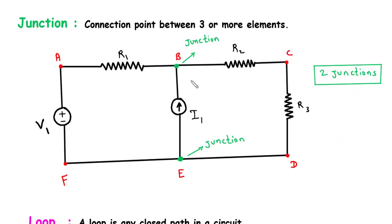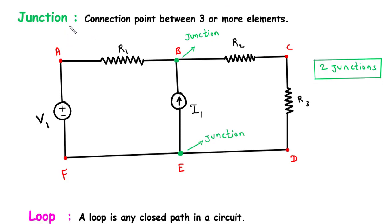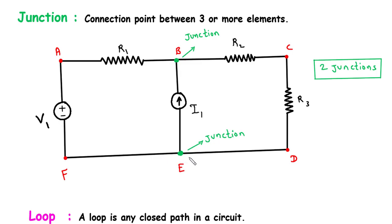Then next is junction. Junction is a connection point between three or more elements. So here we can see there are three elements, and the connection point of these three elements will be a junction. At least three elements or three branches are required to form a junction. In this circuit there are total 2 junctions — B is a junction and E is a junction.